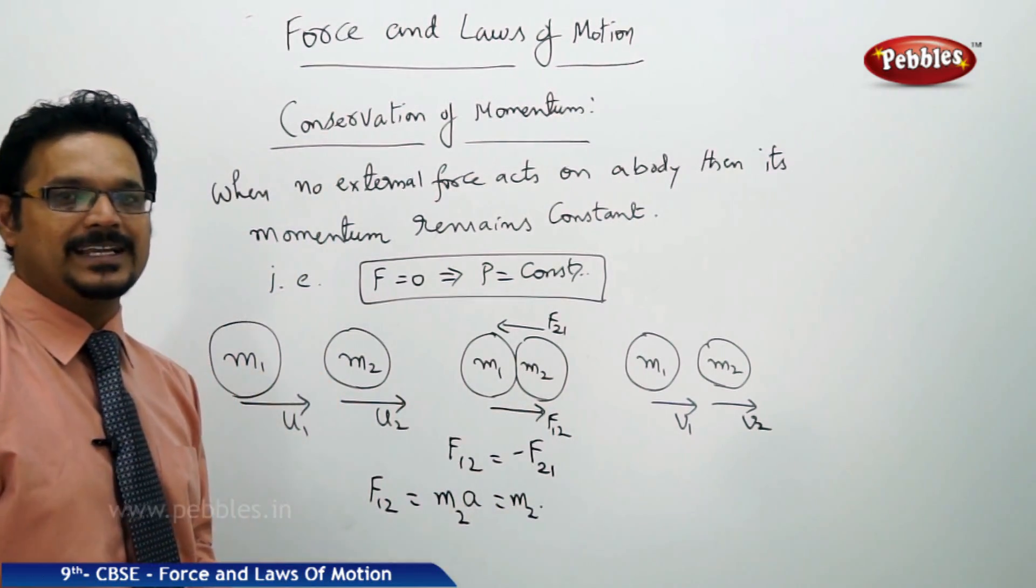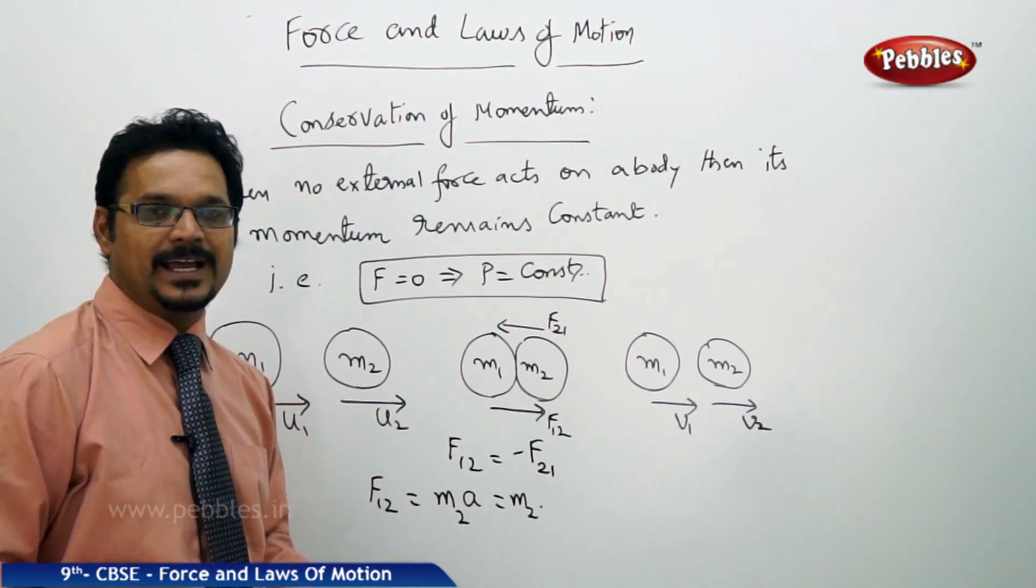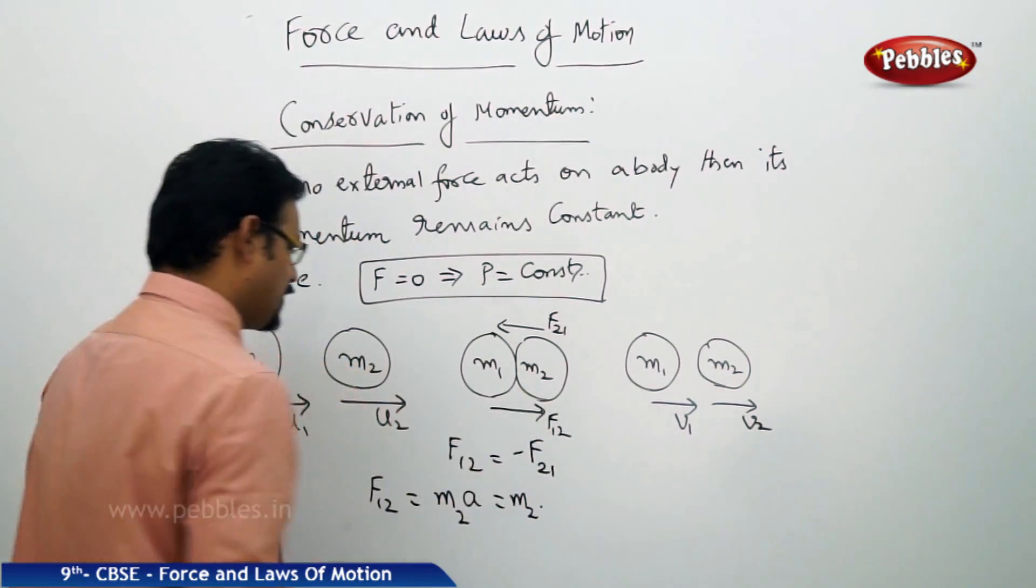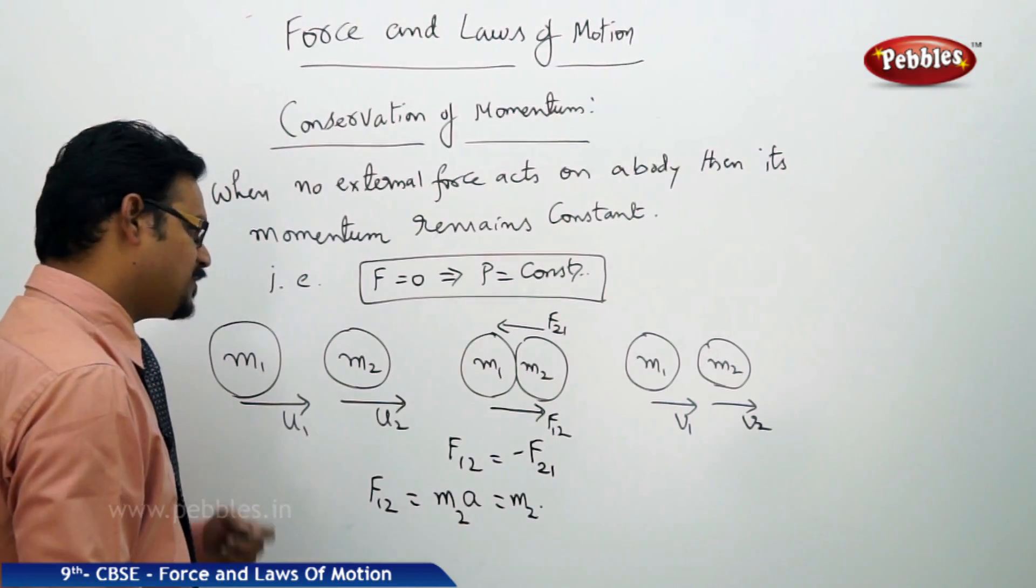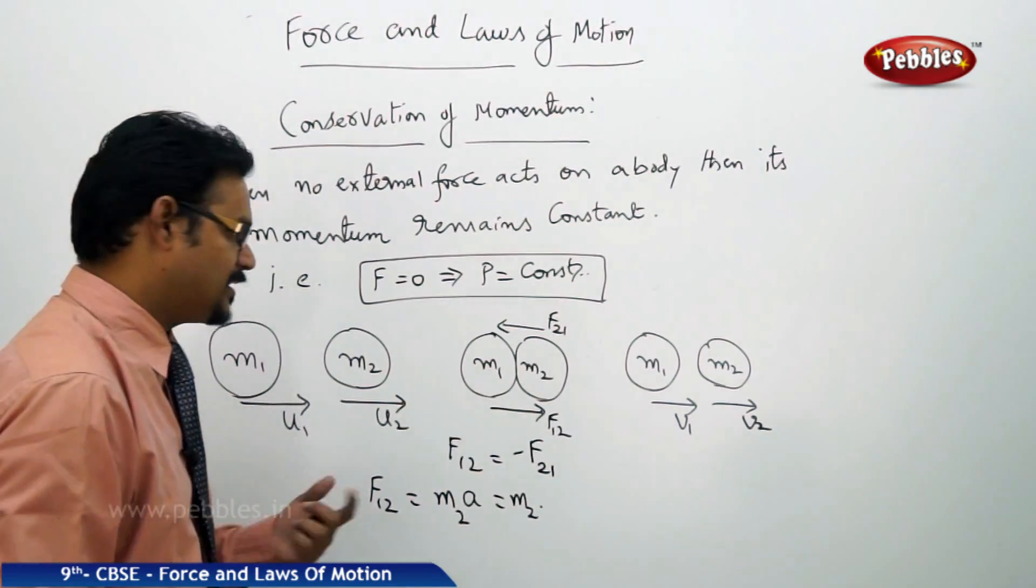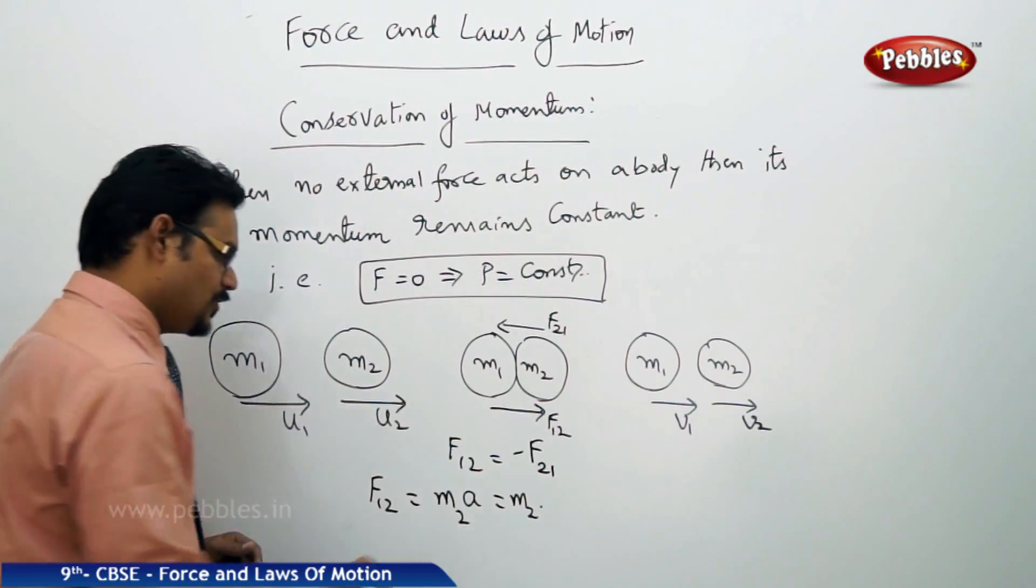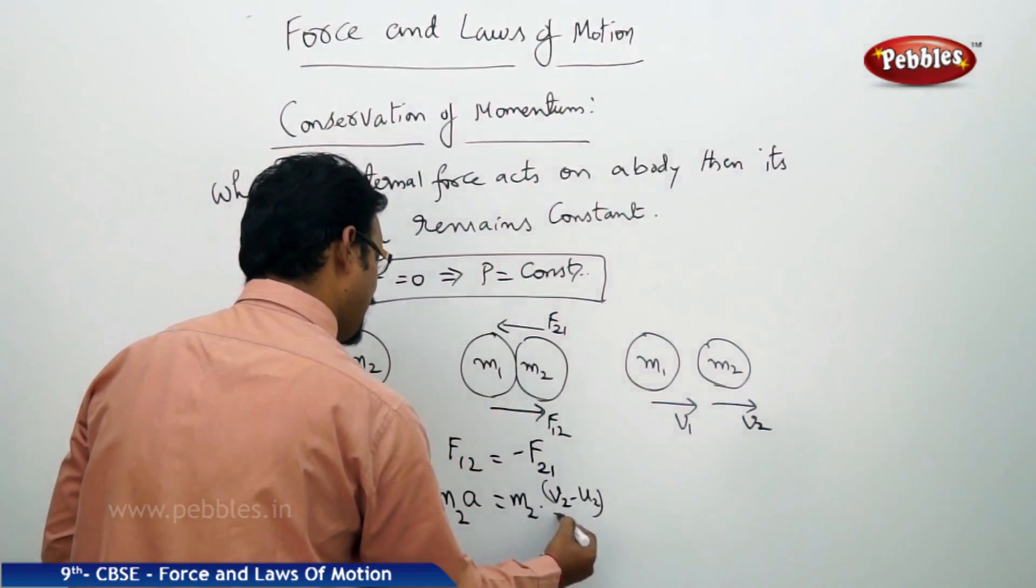Therefore I will write m2 into acceleration. Which body gets acceleration? The body m2 gets acceleration. So the body m2's acceleration is change in velocity by time. Change in velocity is final velocity minus initial velocity. m2 final velocity is v2, initial velocity is u2, so therefore I will write v2 minus u2 by time t.